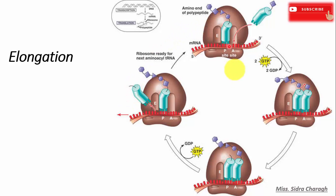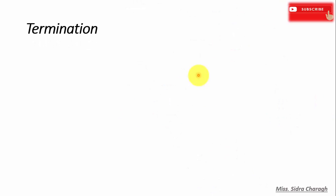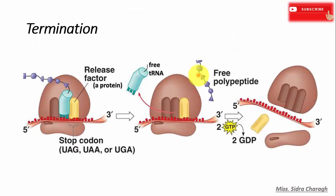This process continues until a stop codon is reached. In termination, when the ribosome A site reaches a stop codon, no transfer RNA has a complementary anticodon.